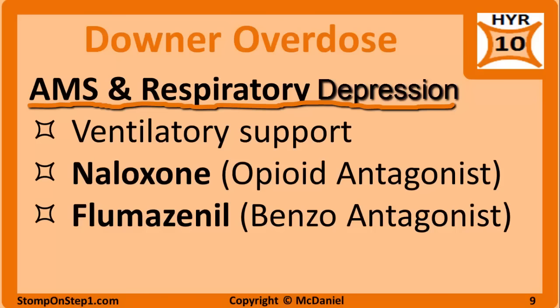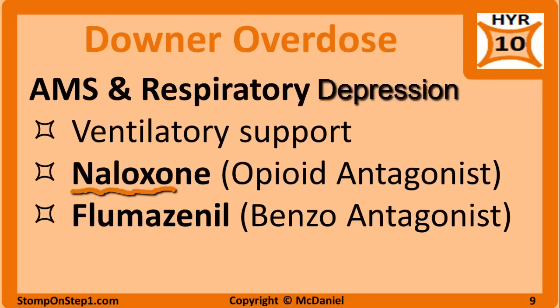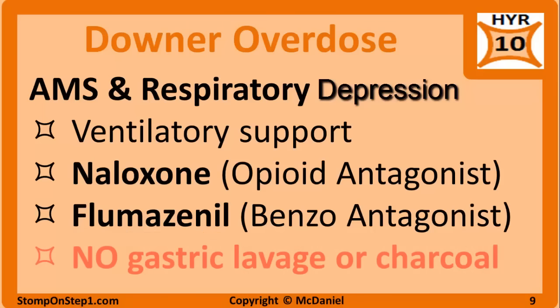The most important intervention for severe overdose of a downer is ventilatory support. For opioid overdose, you often use an opioid antagonist such as naloxone or Narcan, but you also have to be careful with the dose you give as you can easily cause withdrawal by giving too much. Flumazenil is a benzodiazepine receptor antagonist that is sometimes used to treat benzo overdose. Gastric lavage — aka getting your stomach pumped — and activated charcoal are rarely used in overdoses.